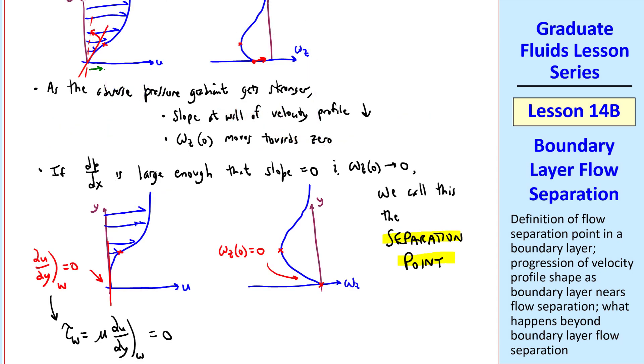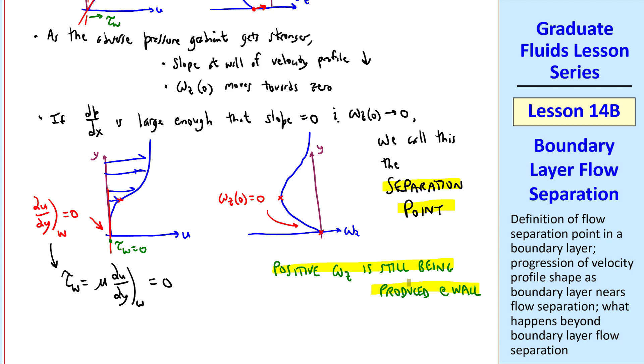Whereas we have a small value of tau w for this adverse pressure gradient case, at flow separation, there is no shear stress. Note also that omega z is still negative everywhere, but it's now 0 at the wall. There's still a slope of omega z, so positive vorticity is still being produced at the wall, as we discussed in the previous lesson.